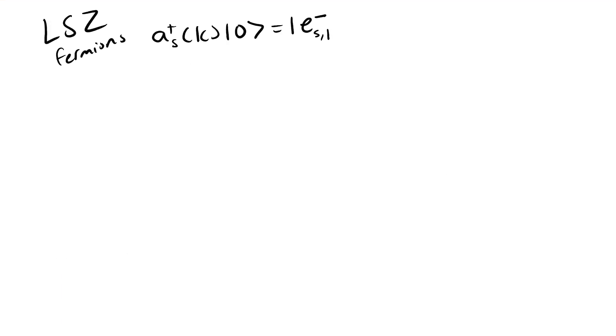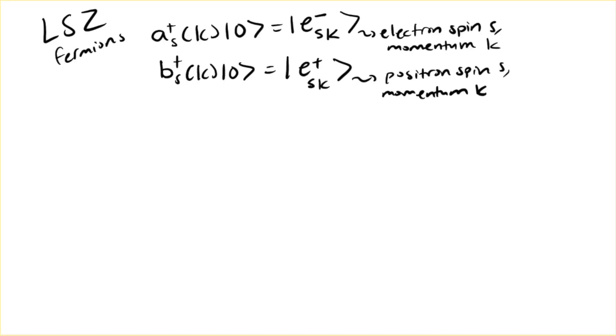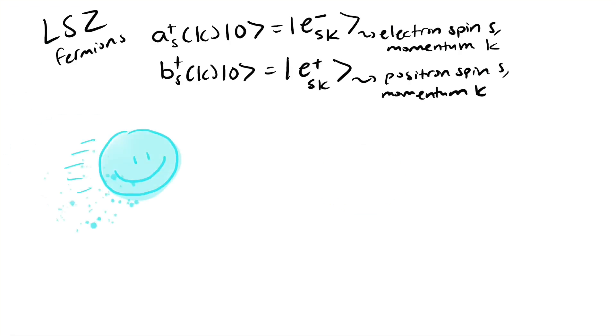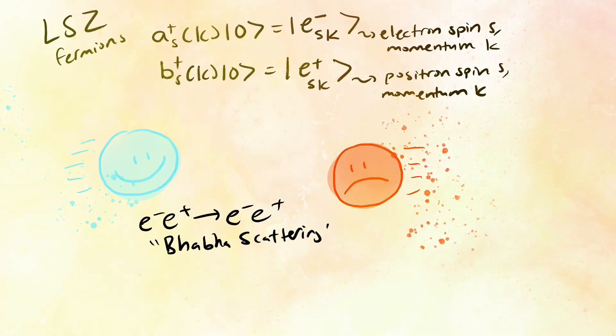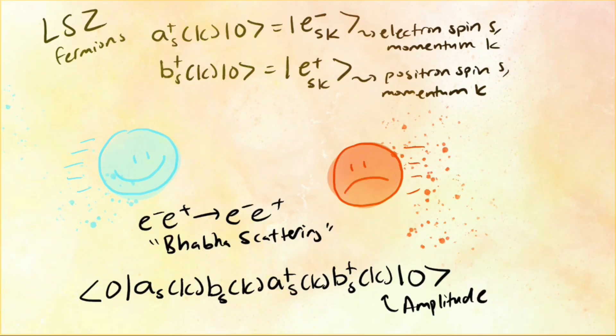Now we can take what we learned and derive the LSZ formula for fermions. I recommend watching the video on deriving the LSZ formula for scalars since we'll use the same steps. The particular LSZ formula we get will depend on what kind of particles we have in the in and out states.